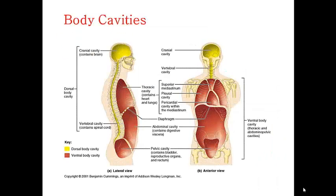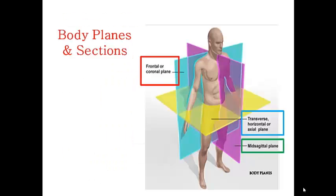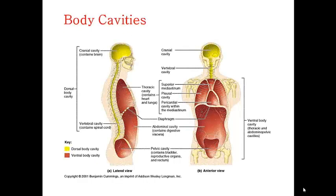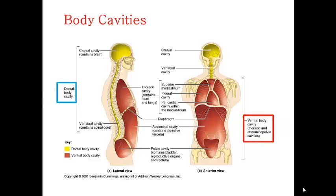The Body Cavity. The body has two sets of internal cavities that lodge and protect the internal organs: the dorsal body cavity and the ventral body cavity. The dorsal body cavity has two subdivisions which are continuous with each other: the cranial cavity, which is the space inside the bony skull containing the brain, and the spinal cavity, the space inside the vertebral column containing the spinal cord.